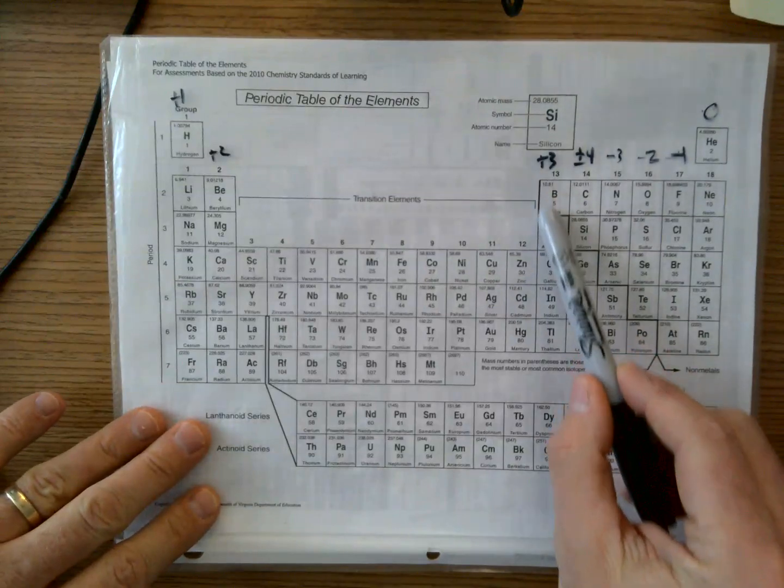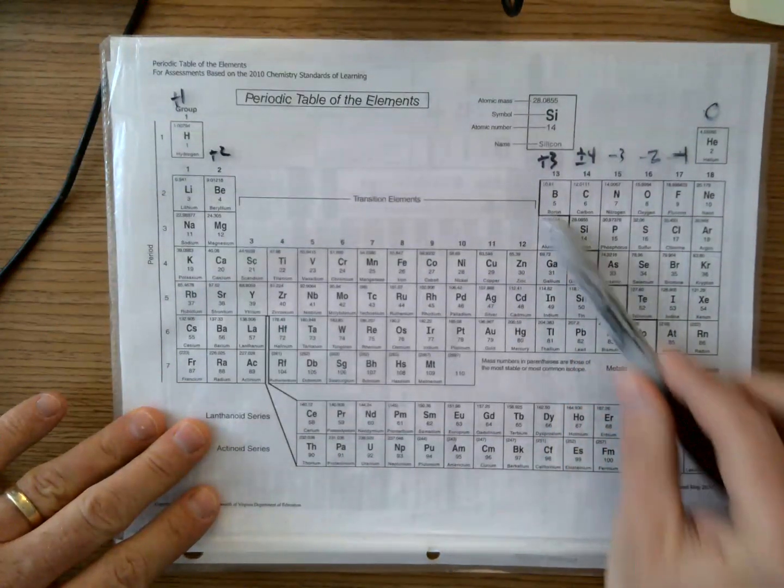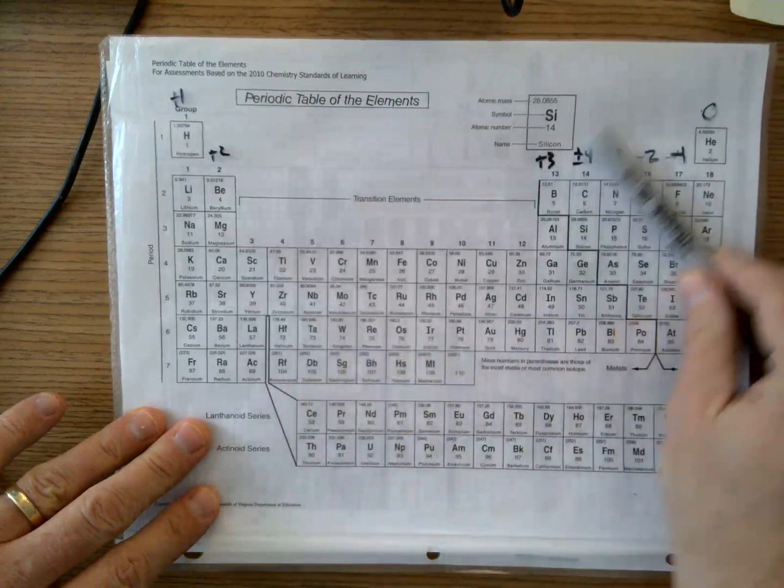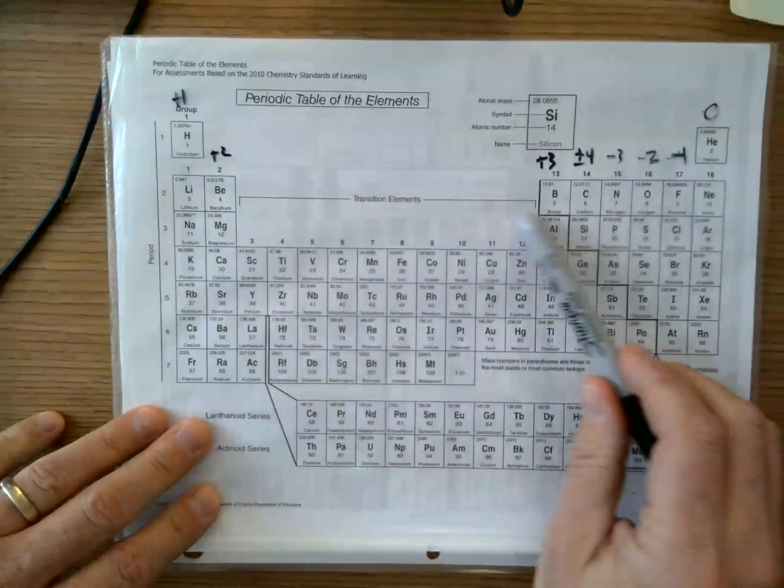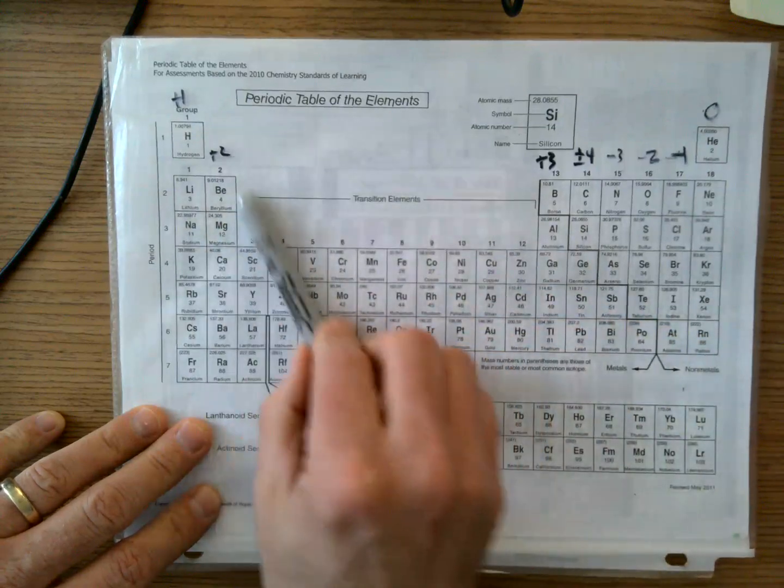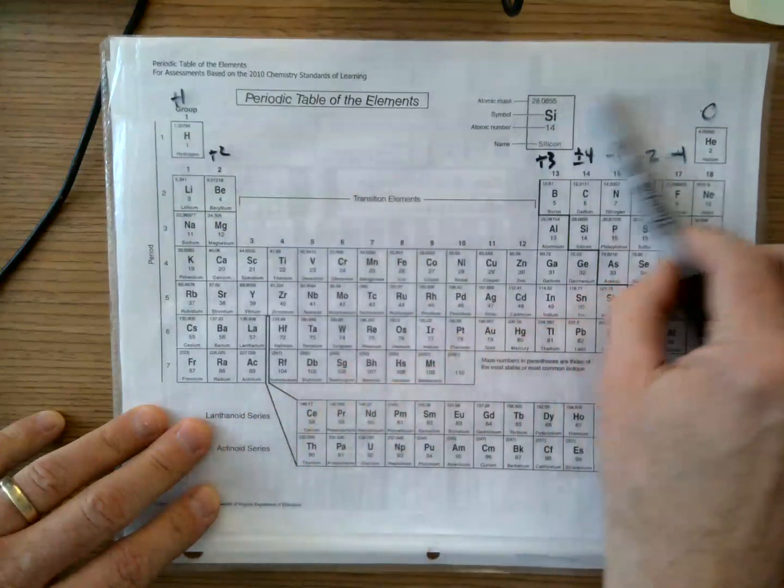You'll notice in the periodic table supplied for you in Schoology, you'll see this line here. And this really separates the metals from the nonmetals. Hydrogen does belong over here. But that's where you can see, I got metals over here. That's a metal. These are nonmetals.